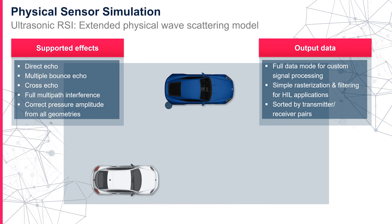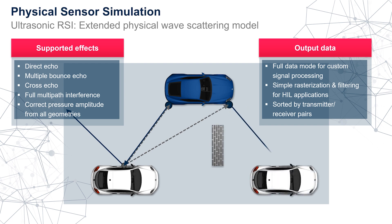The physical scattering model now delivers correct sound pressure values for complex shapes. The underlying mechanism makes it possible that each interaction with the environment returns an echo while the wave is further propagated through the scene, considering material properties and atmospheric effects. Of course the known effects such as cross echoes are still part of the model, and overall this results in much higher accuracy in complex scenes.